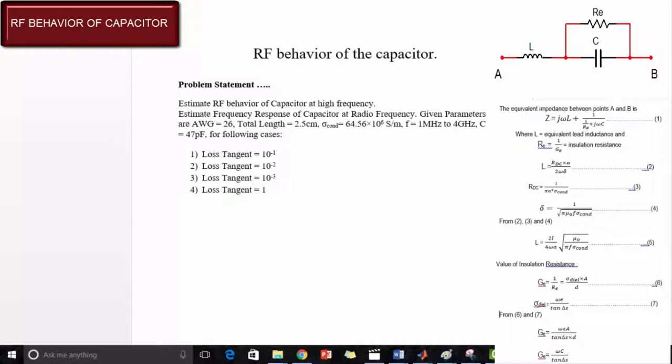A dielectric loss is accounted by RE equals 1 by GE. The loss tangent tan delta S is given as follows. The total impedance of capacitor resistor can thus be given as j omega L plus 1 upon j omega C plus RS plus 1 by RE.